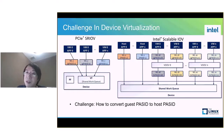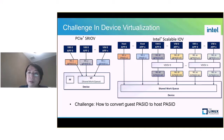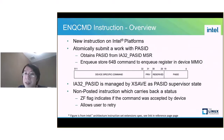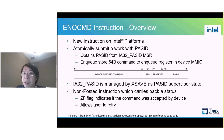A new instruction, ENQCMD, is introduced to address this gap. ENQCMD is a new instruction on the Intel platform that atomically submits a workload to a device. It obtains the PASID from IA32 PASID MSR, and then enqueues and stores 64-byte command data to an enqueue register implemented in device MMIO.